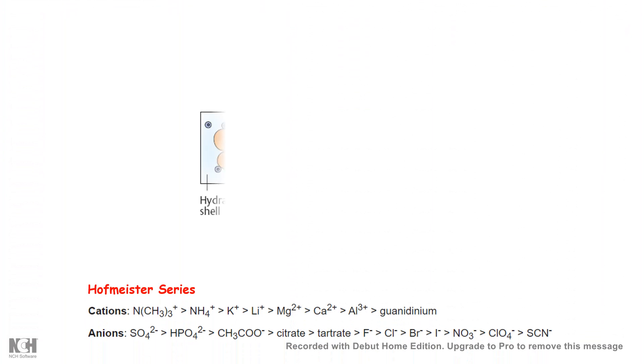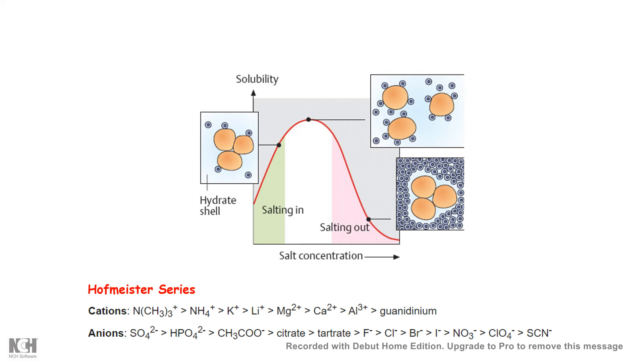Now, what we learned so far is at low salt concentration, the protein's charge is effectively masked by the counter ions and the hydration shell is nicely formed around it. As a result, this protein is soluble. But with very high salt concentration, all of the solute molecules are interacting with each other rather than interacting with the solvent molecules. So solute-solute interaction is much more higher than the solute-solvent interaction. As a result, it's precipitating.